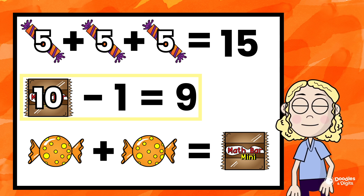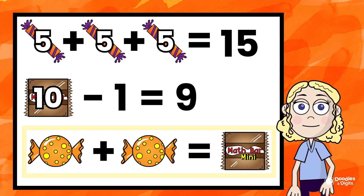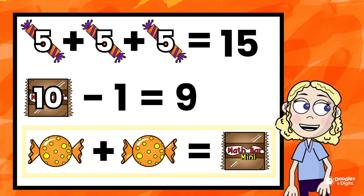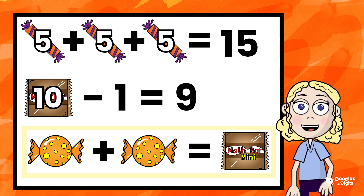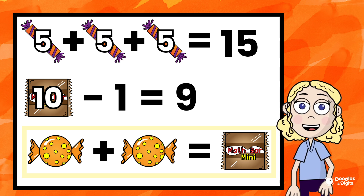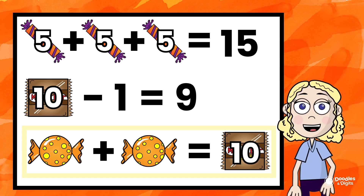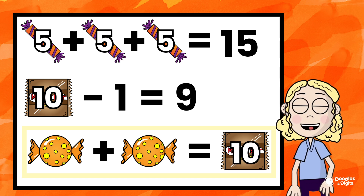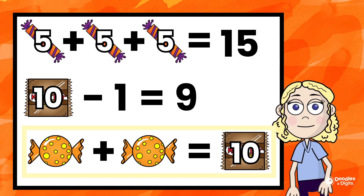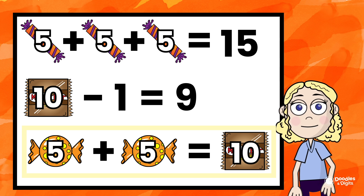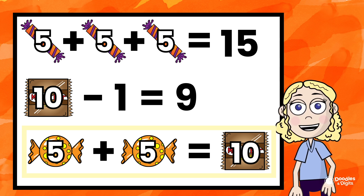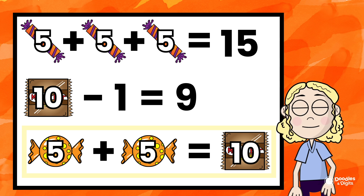All right, now we're on the bottom problem. We have orange and yellow candy plus orange and yellow candy equals the mini candy bar. We now know the mini candy bar. So I'm going to think: what plus what, that's the same number, equals 10? 5. So the orange and yellow candy represents 5.